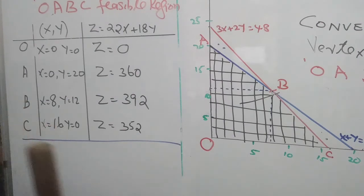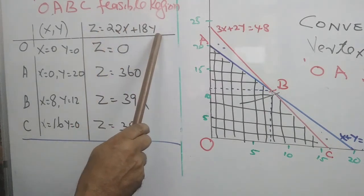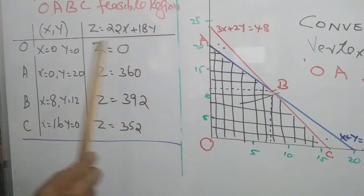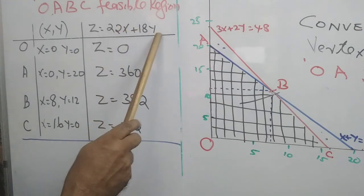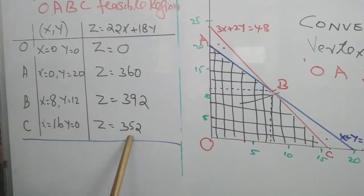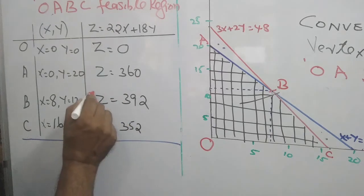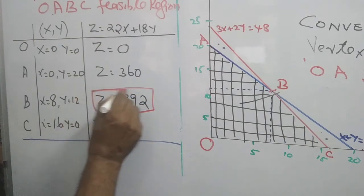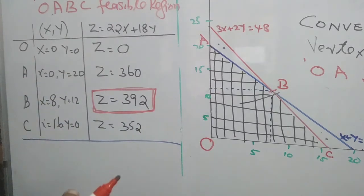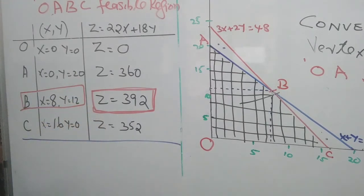We locate the feasible region, find the values at the vertices, then evaluate the objective function Z equals 22x plus 18y at each vertex. At O: Z equals 0. At A: Z equals 360. At B: Z equals 392. At C: Z equals 352. Since our problem is to maximize, the maximum value is 392 at coordinate B, where x equals 8 and y equals 12. Therefore the solution to the problem is x equals 8, y equals 12, and the maximum value of Z is 392.